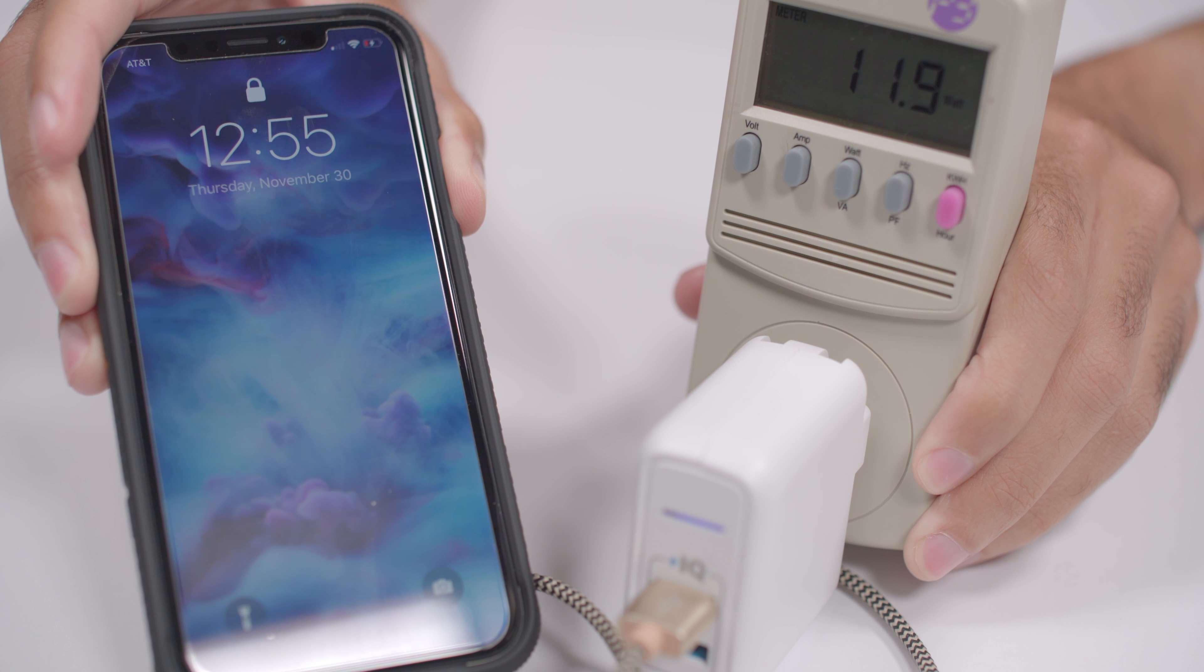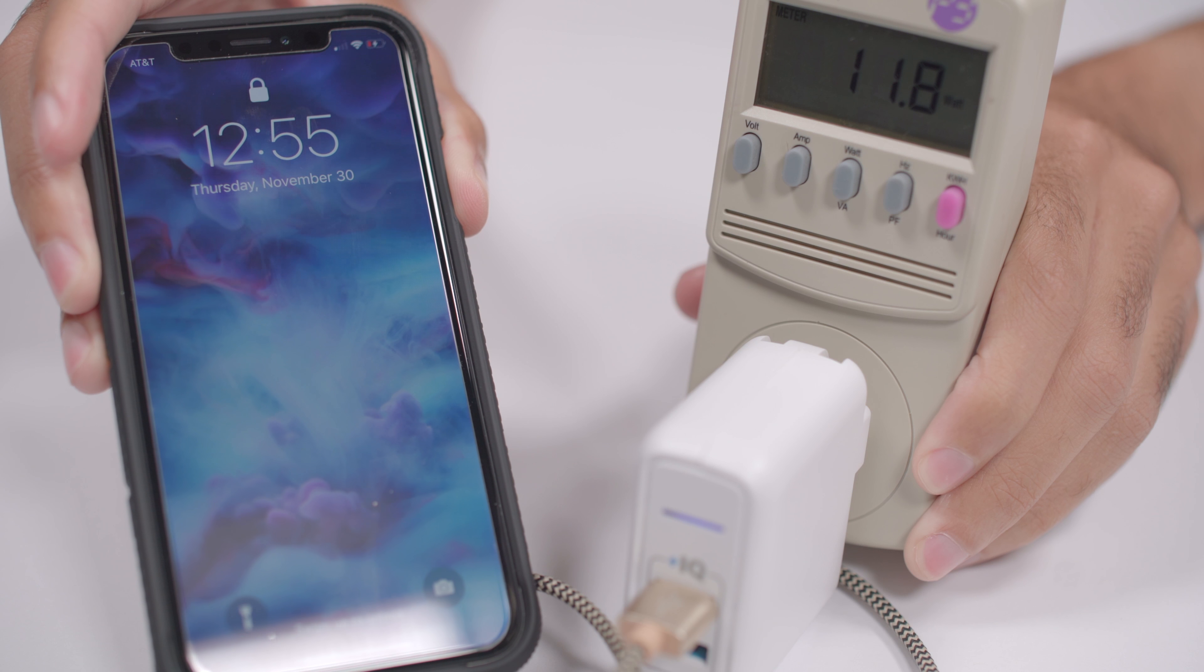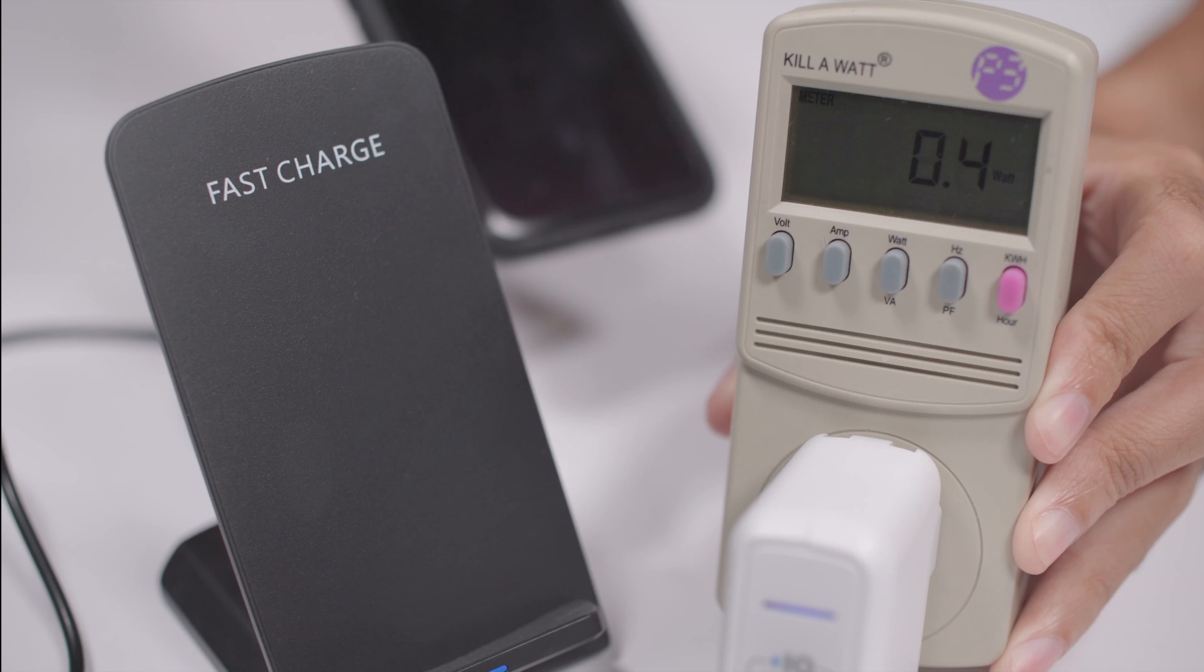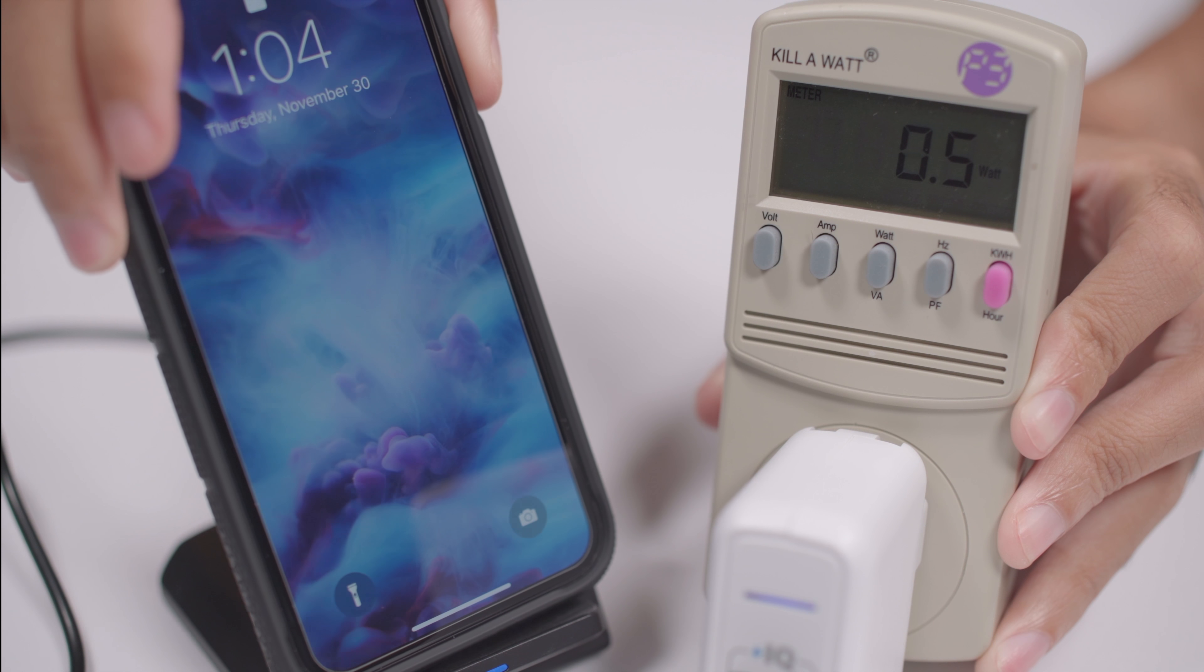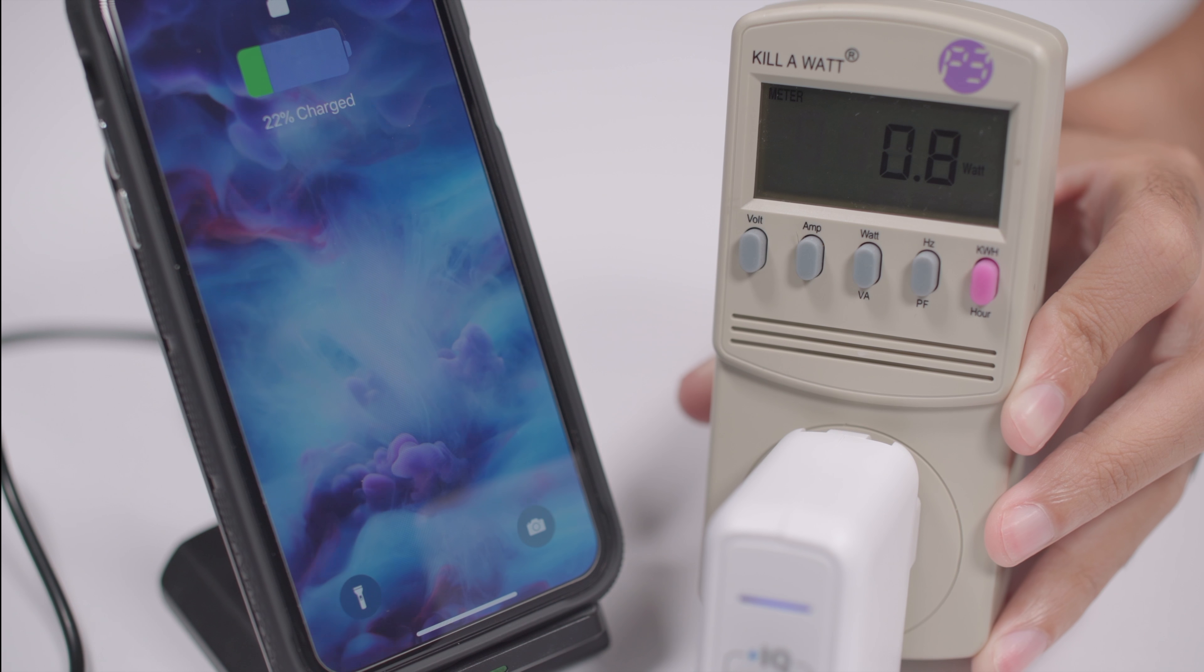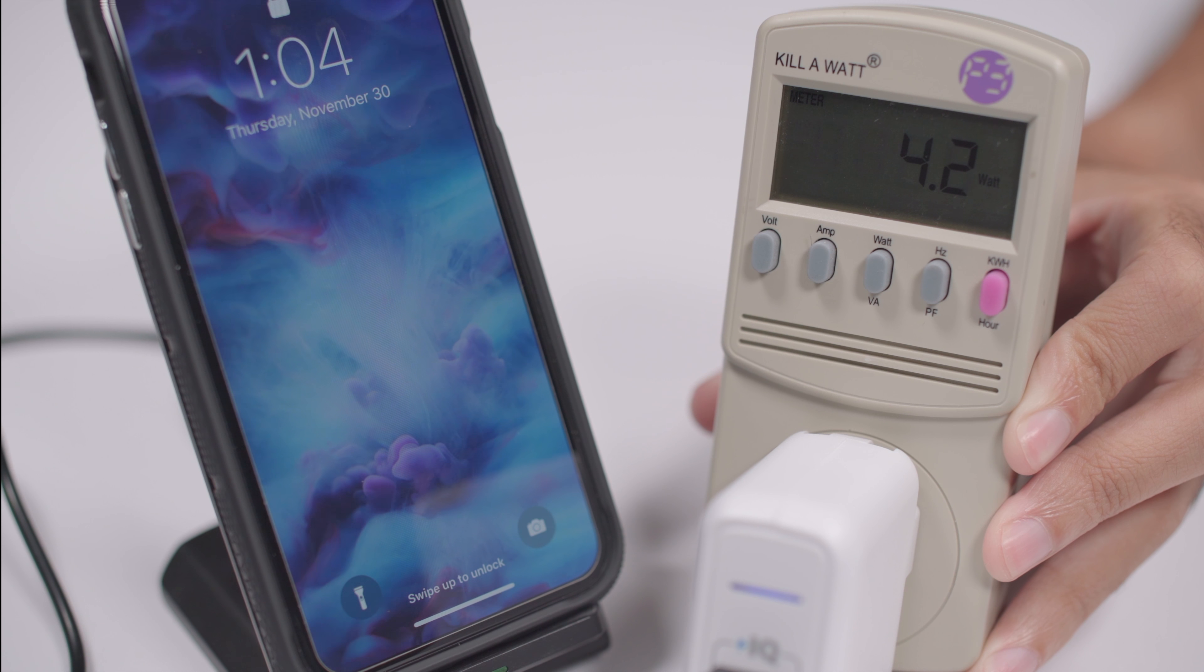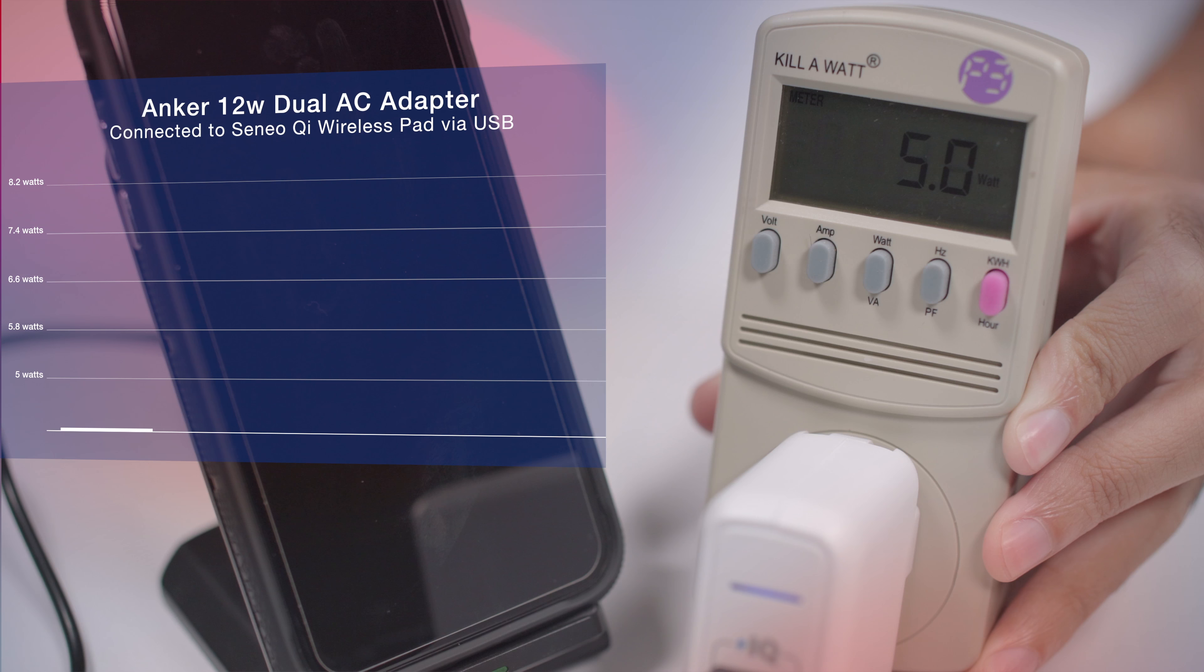Now let's put Qi wireless charging to the test. Amazon is saturated with affordable off-brand wireless Qi pads. This Seneo was 20 bucks. Despite the minute it takes to ramp up, it draws an average of about 8.2 watts, maxing at about 8.6 with the screen on.